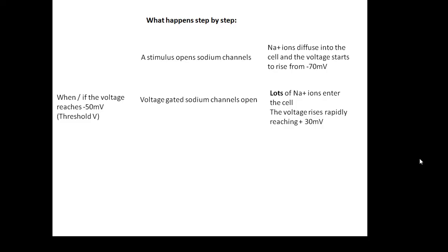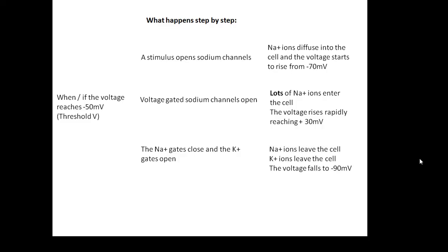What happens then is that the potassium channels open. The sodium gates close and the potassium gates open. Sodium ions leave the cell; potassium ions leave the cell. The voltage falls all the way down to minus 90 millivolts. Then the pumps start to do their job and put the ions back to where they were at the beginning, and you return to the resting potential.